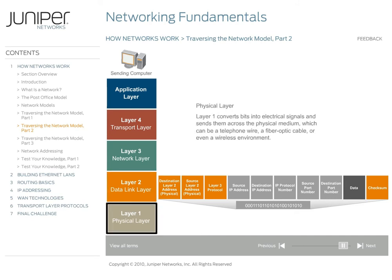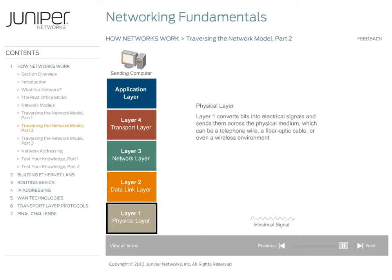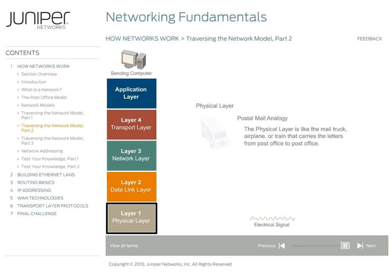The physical layer, or layer 1, converts these bits into electrical signals and sends them across the physical medium, which can be a telephone wire, a fiber optic cable, or even a wireless environment. Physical layer specifications define characteristics such as cabling specifications, voltage levels, physical data rates, maximum transmission distances, and physical connectors. In our mail analogy, the physical layer is like the mail truck, airplane, or train that carries the letters from post office to post office.